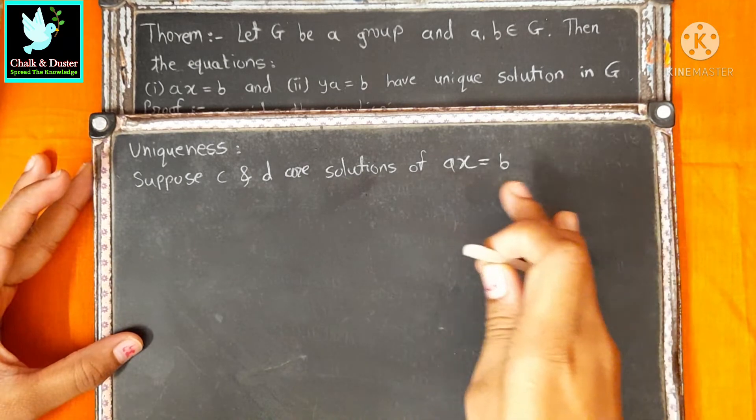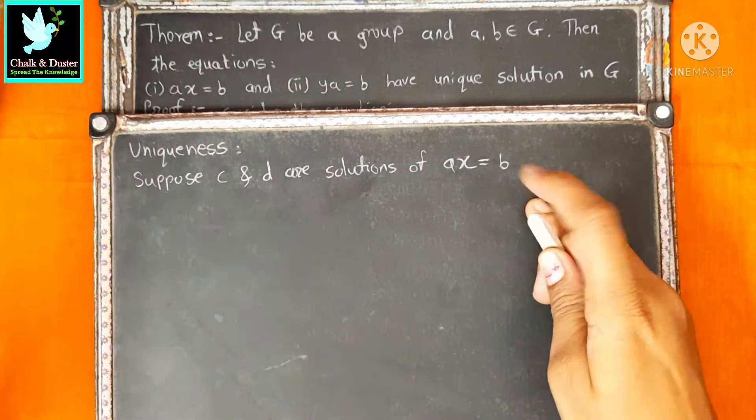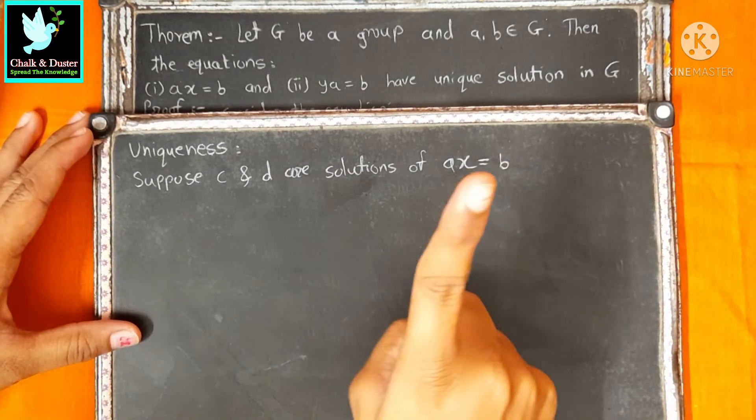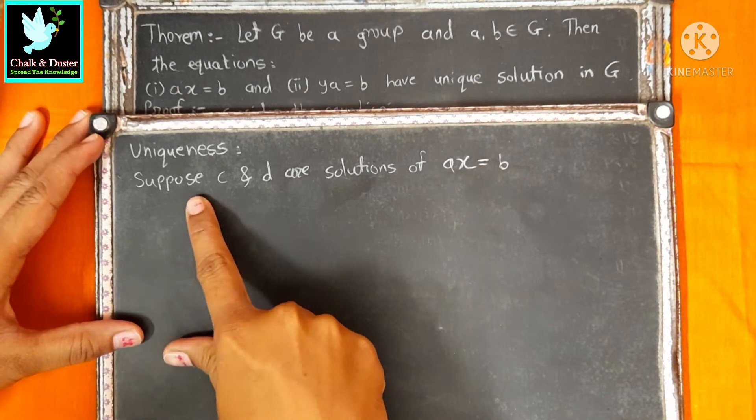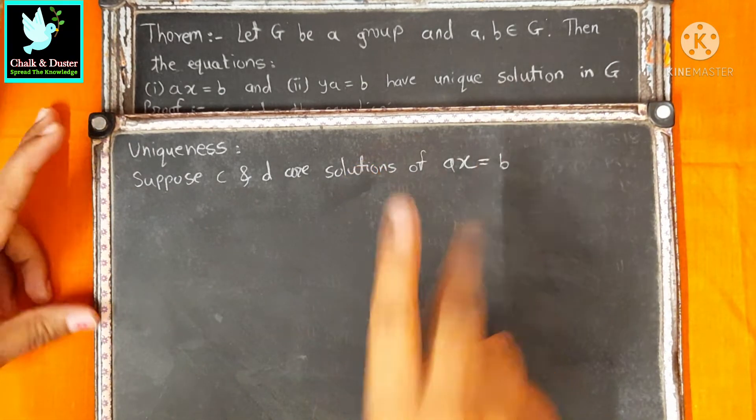Suppose C and D are solutions of AX equal to B. What does it mean? It means we will assume two solutions.